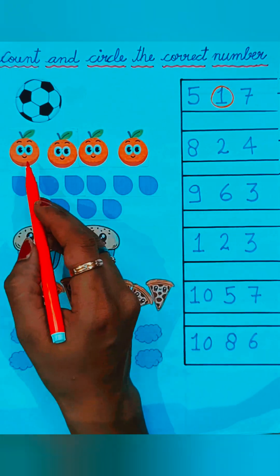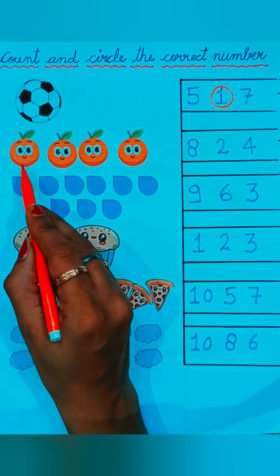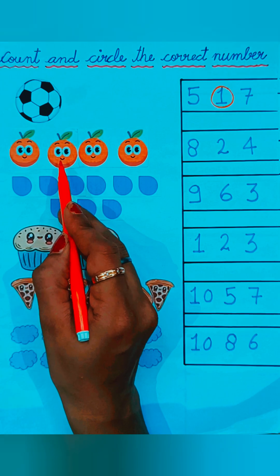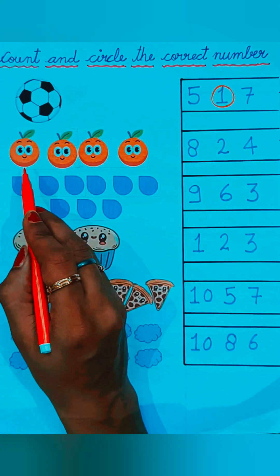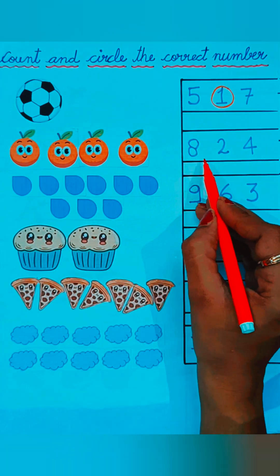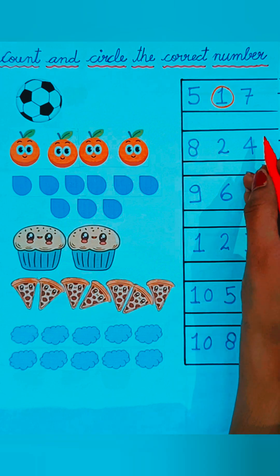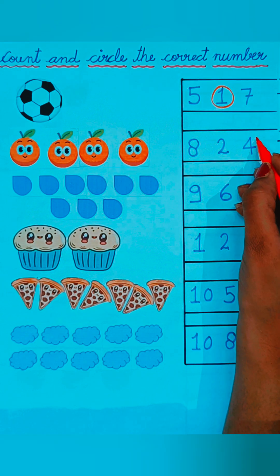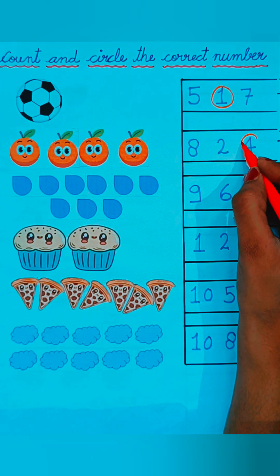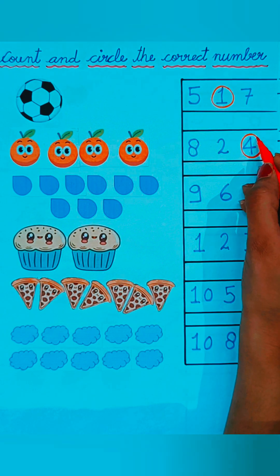See the second picture — orange. Orange pictures are given. One, two, three, four — four pictures are given. We have to circle the correct number. Four, eight, two, and four are given, so four is the correct number.